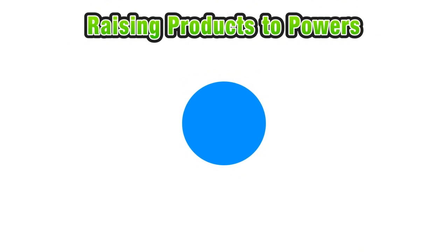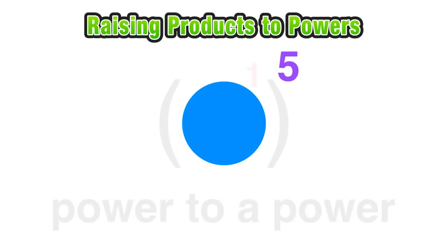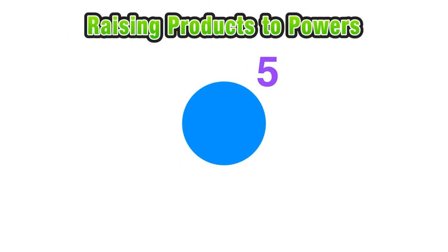Our conceptual journey begins with a blue circle, which can represent whatever value you'd like. If we raise this blue circle to the fifth power, we can enclose it in parentheses and give it an exponent of one, since any value raised to the first power is still itself — every value without a written exponent has an invisible exponent of one. Using the power-to-power rule from the last lesson, we multiply exponents together, and five times one equals five, so this is equivalent to the blue circle to the fifth power.